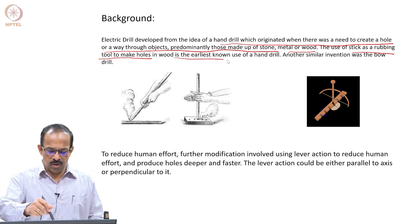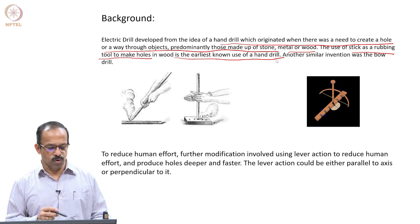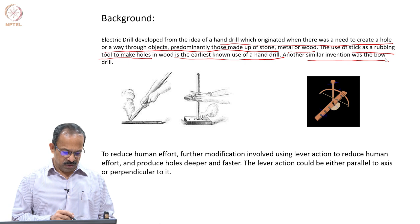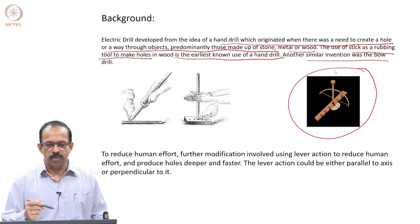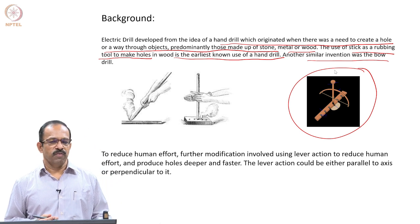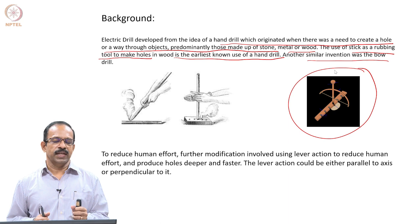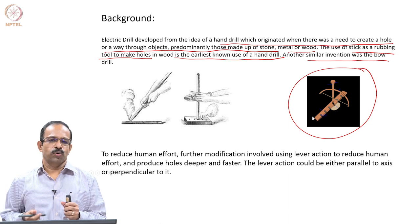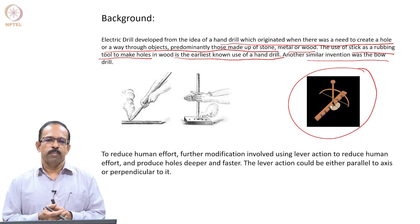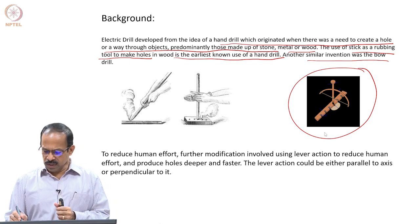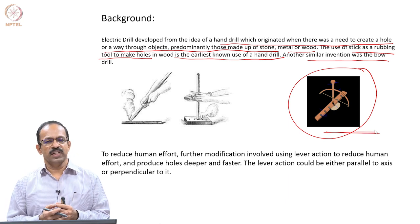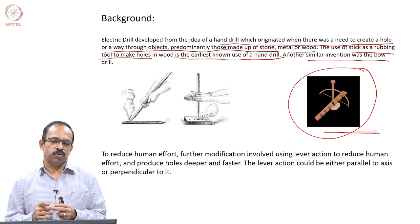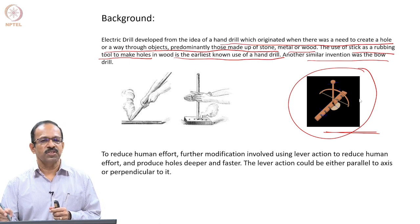The earliest known use of a hand drill was using sticks to make holes in wood. Another similar tool was the bow — you have a tool placed on the material and a bow arrangement, and the to-and-fro motion of the bow is converted to a rotary motion to make holes. These things were very common in India even 30–40 years ago, because there was no electricity in villages and most carpenters used this kind of mechanism.